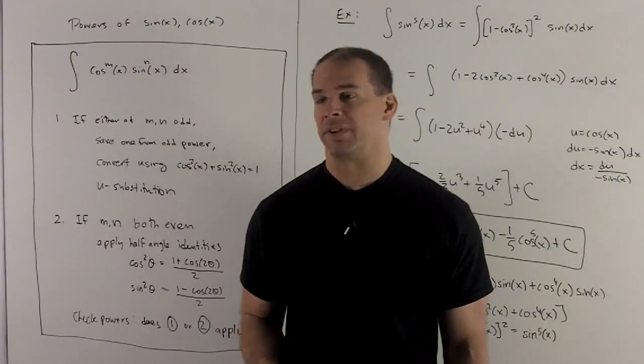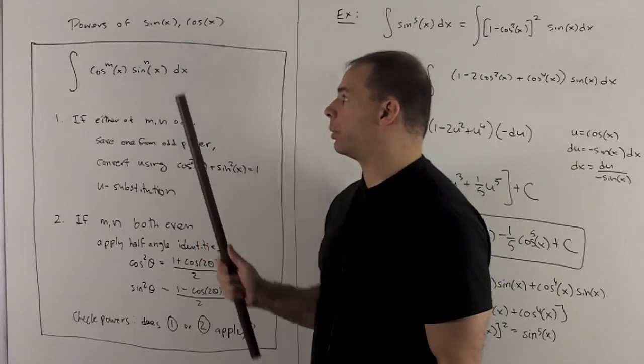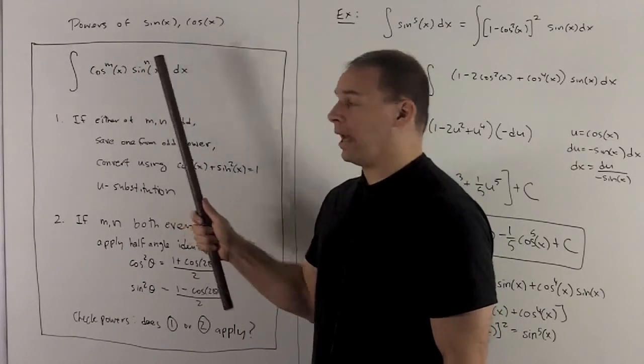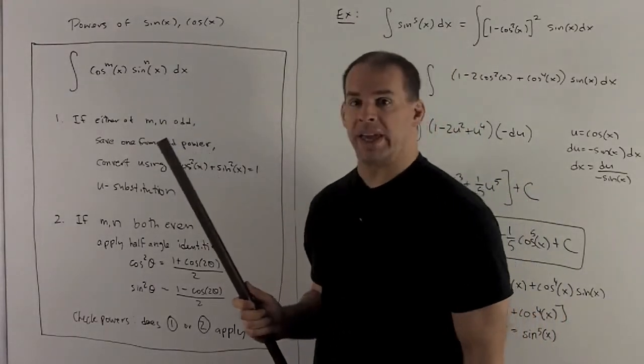I want to consider definite integrals of the form cosine to a power times sine to a power, where m and n are both non-negative integers. We're going to have two cases.